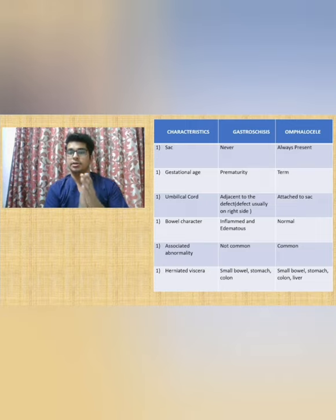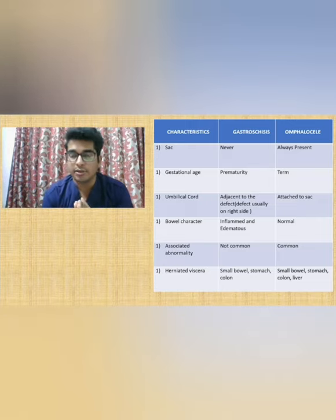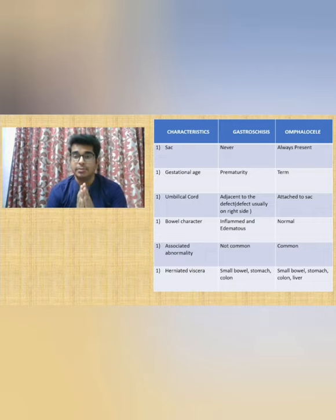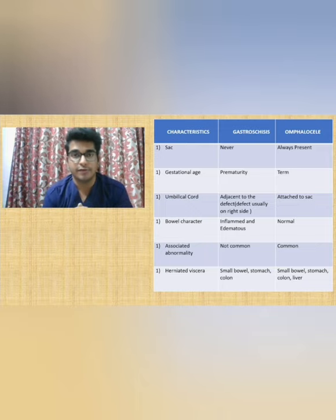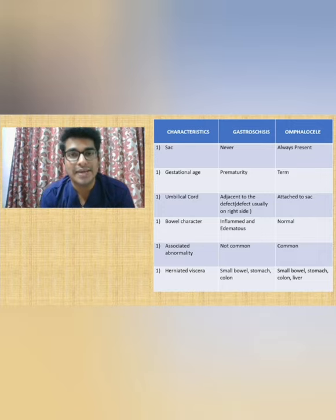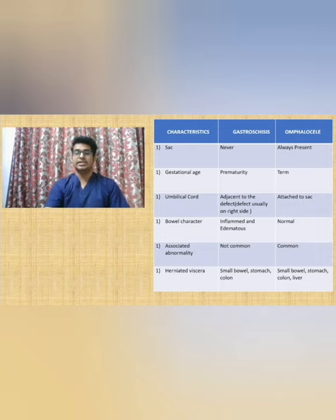One has a sac around it while the other one doesn't. One has edematous inflamed bowel loops, and one is associated with congenital abnormalities while the other is not. It can be confusing, so let's get back to the basics of embryology and understand the actual pathology.